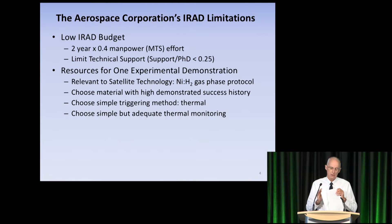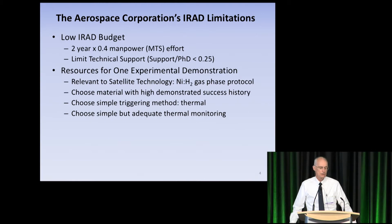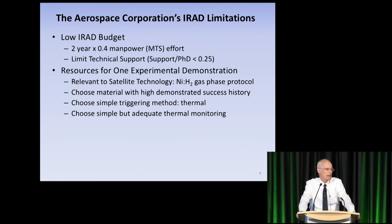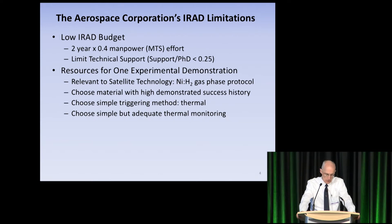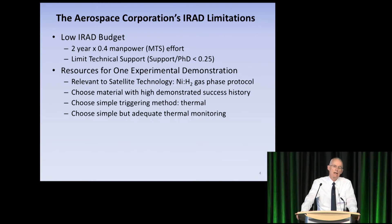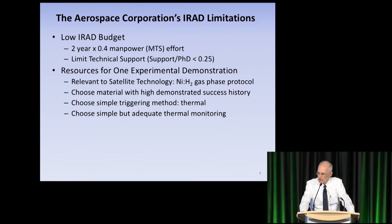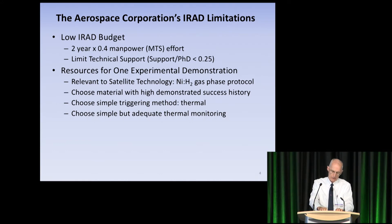The environment I'm working in is that most of our research in the research labs is externally funded, and we have a limited internal R&D budget — typically something like half manpower for a couple of years. So in choosing an experiment in a skeptical environment, I basically had one shot at it. It had to be pretty simple. I built in three criteria: it had to be simple to implement, have a high probability of success, and be reproducible by an independent person at least once. For simplicity, I wanted thermal triggering — no lasers and plasmas.